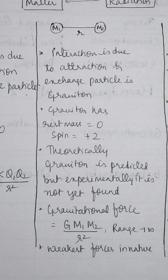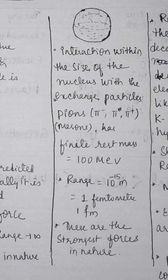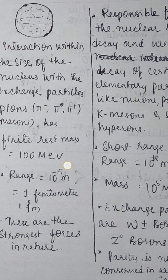The strong nuclear force acts within the nucleus. The interaction occurs within the size of the nucleus. The exchange particles are pions, mesons, and gluons, which have a rest mass of about 100 MeV. The range of the strong nuclear force is 10⁻¹⁵ meters, or 1 femtometer — a very short range force. The strong nuclear force is the strongest force in nature.